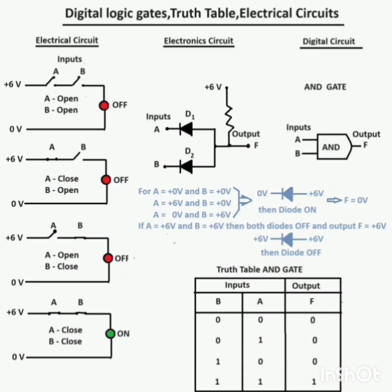Hello. In this video, we look at digital logic gates, truth tables, and electrical circuits. The details given here are for AND gates, which have an electrical circuit with two inputs, A and B.